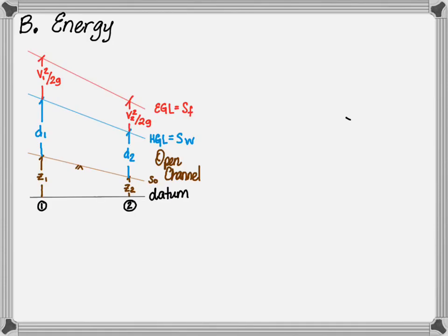As you may recall from a prior video, the total energy within an open channel includes the summation of the elevation head, the water surface depth d, and the velocity head v squared divided by 2g. The difference between the energies at point 1 and point 2 is the friction head hf. The bed slope of the channel is determined based on the change in the elevation head. The water surface slope, or hydraulic grade line, is based on the difference between the elevation and the water surface depth. The friction slope, or energy grade line, is determined by the change in the elevation head, velocity head, and water surface depth.